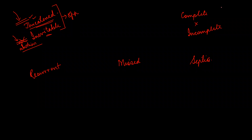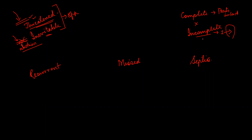Coming to complete and incomplete abortion: complete abortion is when the abortus has been expelled out and all parts are intact. But if the parts are not intact — suppose one or two parts are still remaining inside the uterine cavity — that is called incomplete abortion.